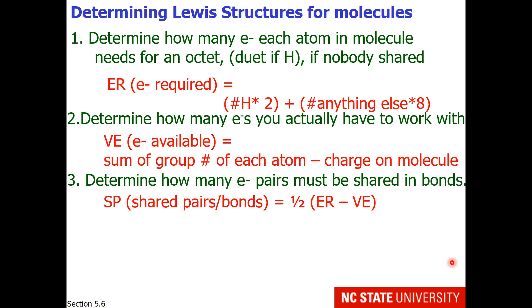Next, we would need to determine how many electron pairs must be shared in bonds. These are called shared pairs, and they are one-half the value of electrons required minus valence electrons.